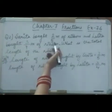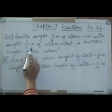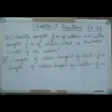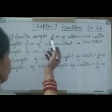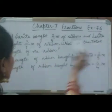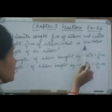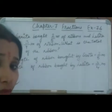The first problem: Sarita bought 2/5 meter of ribbon and Lalita bought 3/4 meter of ribbon. What is the total length of the ribbon? First, read the question properly. Sarita's ribbon is 2/5 and Lalita's ribbon is 3/4 meter. Since it asks for the total length, you will add.